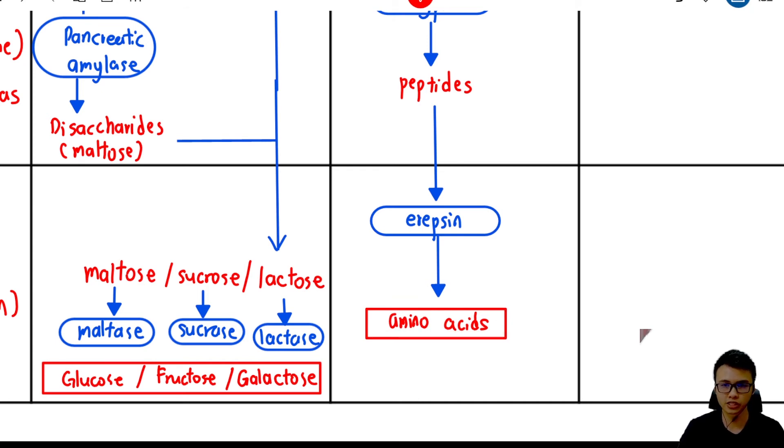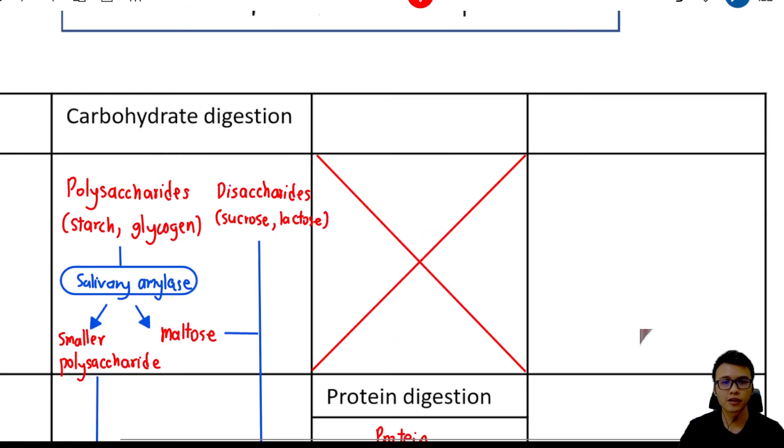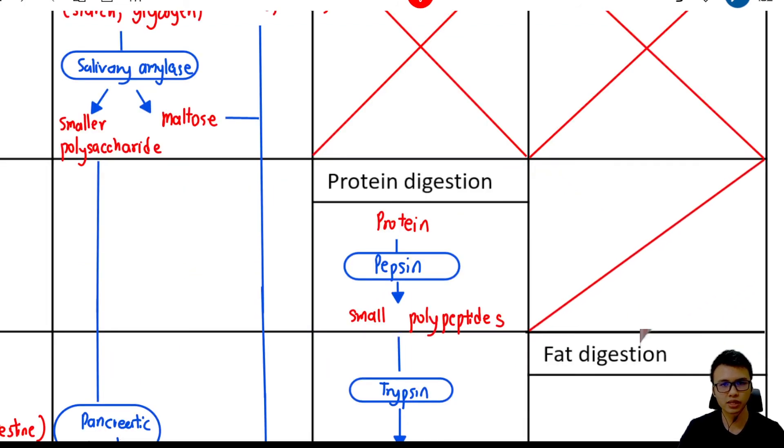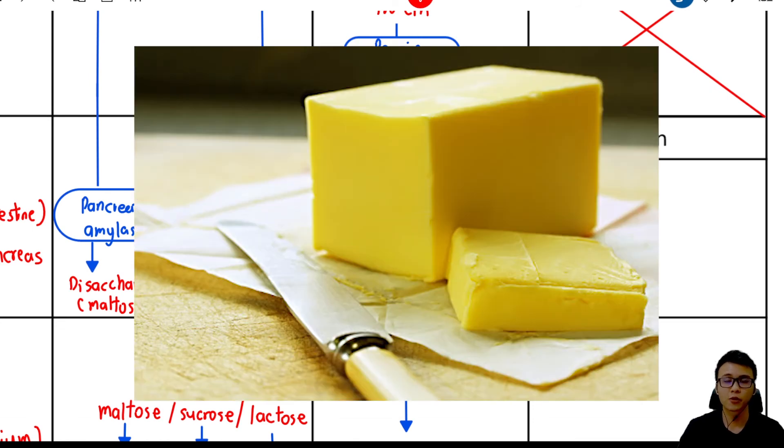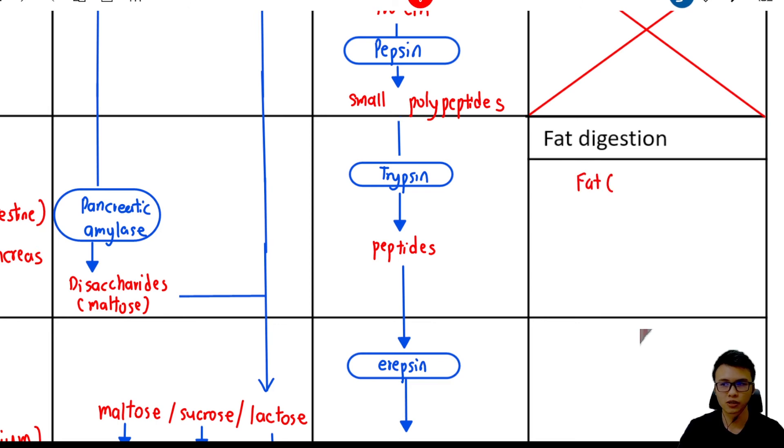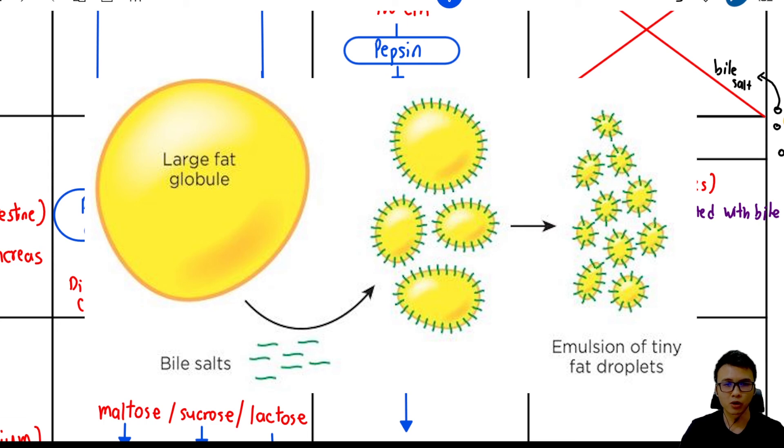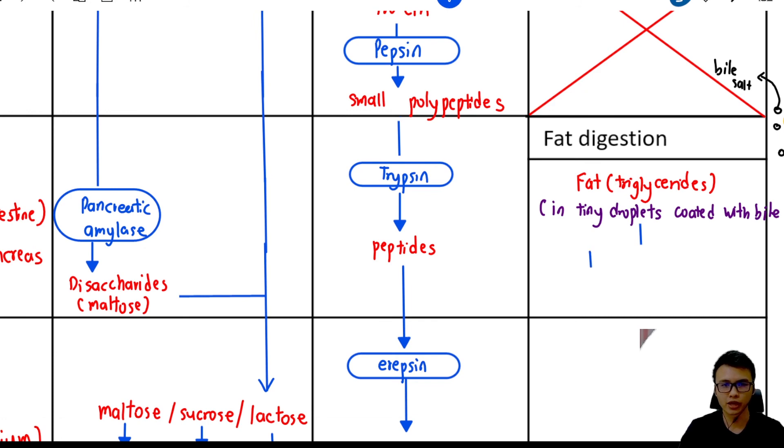That's it for the amino acid part. Let's move on to fat digestion. Take note that there is no fat digestion in our mouth or stomach. The first fat digestion happens in our duodenum. The fat that we consume from food is called fat or triglyceride. Don't forget that this fat is emulsified by bile salt from our gallbladder. The fat is in tiny droplet condition, coated by bile salt. The fat is emulsified by bile salt to increase the surface area so it can be easily digested by pancreatic lipase to form fatty acid and glycerol.